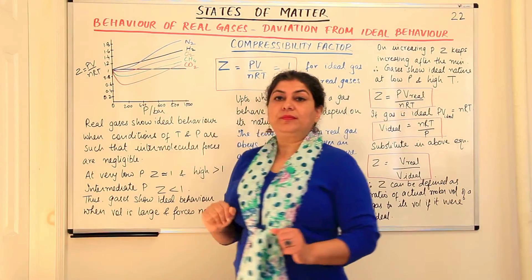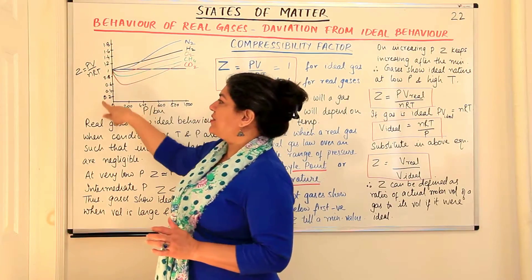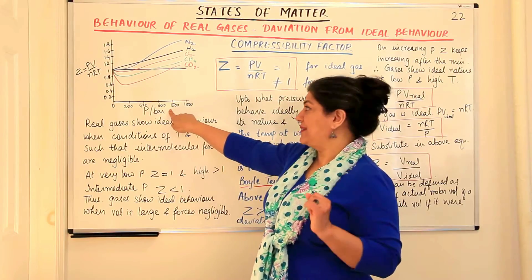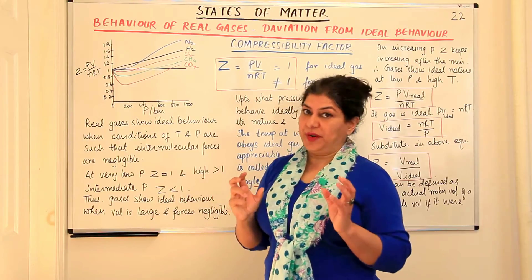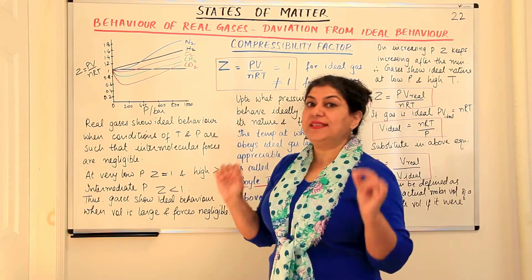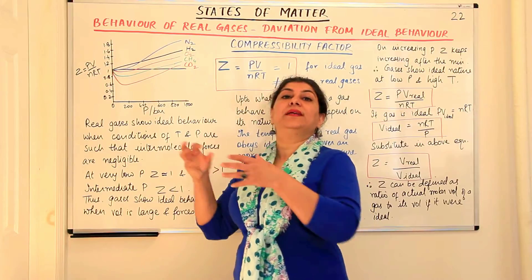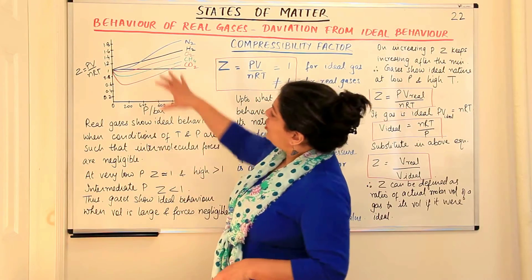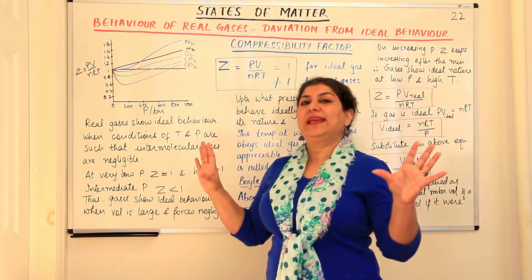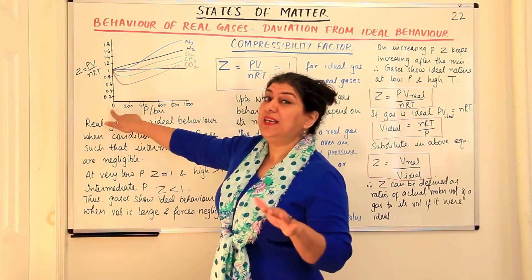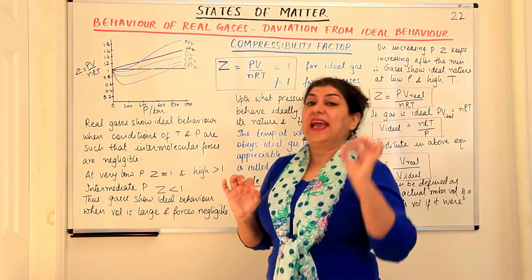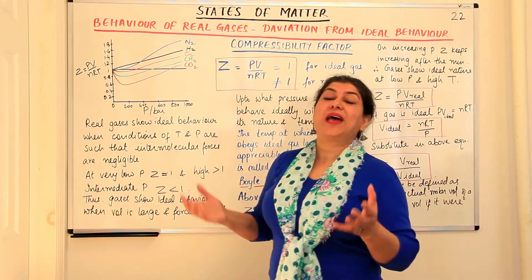Look at this graph. We have plotted compressibility factor along the y-axis and pressure in bars along the x-axis. Different gases have been taken at a certain temperature and we are plotting their compressibility factors against varying pressure. We find that the compressibility factor of all gases at very, very low pressures — approximately zero — is 1. For an ideal gas, the compressibility factor should be 1.